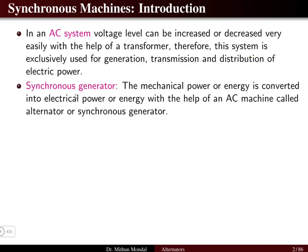In a synchronous generator, the mechanical power or energy is converted into electrical power or energy with the help of an AC machine, which is basically known as the alternator or the synchronous generator. So in a synchronous generator we are converting mechanical energy into electrical energy, and this is an AC machine.